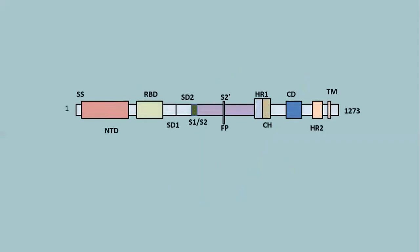This is the protein structure of the spike protein. It has many subunits and many domains, and altogether it is a 1273 amino acid long protein. From the left, you can see there is an N-terminal domain, a receptor binding domain, S domain, HR, CD, and TM domains. Upon getting folded, some of these domains would be exposed on the outer surface of the spike protein, while some will be embedded within it.